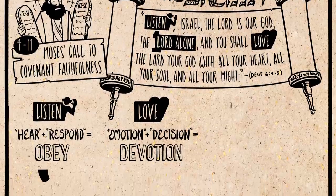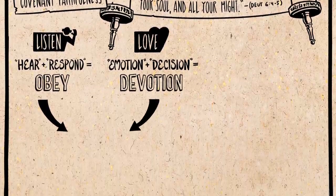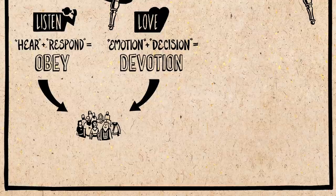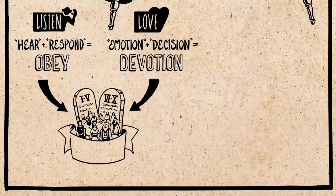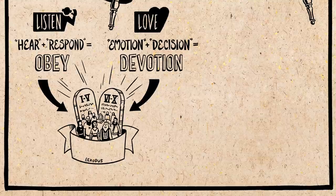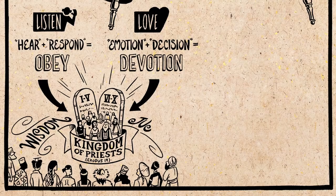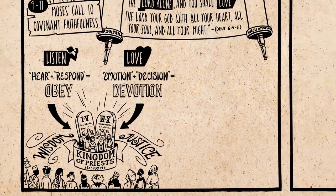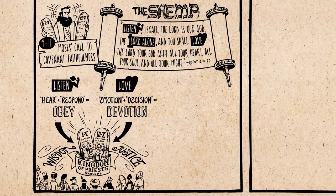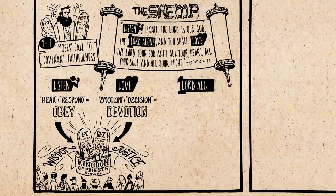Now for Israel, their obedience and devotion to God served a much larger purpose. Obedience to the laws is going to make Israel a unique people among the nations. Just like God said at Mount Sinai, they will become a kingdom of priests. Israel has the chance by following the laws to show the whole world the wisdom and the justice of God. The other key idea in the Shema is that Israel was called to obey and be devoted to the Lord alone, or literally in Hebrew, the Lord is one.